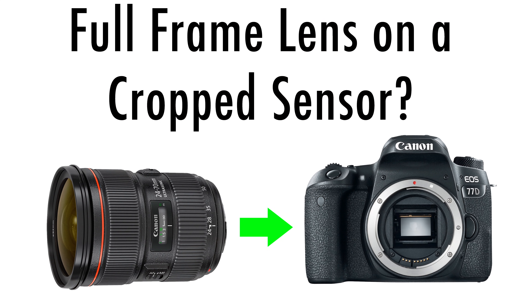Hey everybody, today I'm going to address a very controversial topic. I've been meaning to do it for a long time and my hand's kind of been forced into it. This is the discussion I hear so often about using full frame lenses on crop sensor bodies. I get an email it seems like every other day asking me why I would use a full frame lens on a crop sensor body in my epic shootouts, because it makes the image softer.